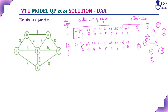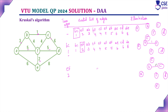The next edge to consider is EF with weight 2. If you include this edge, it won't form a cycle. So we can include edge EF with weight 2. The illustration now shows edges BC and EF both included.